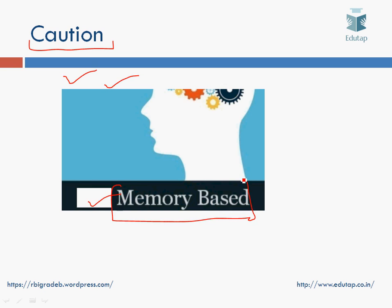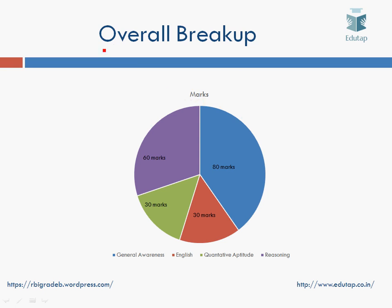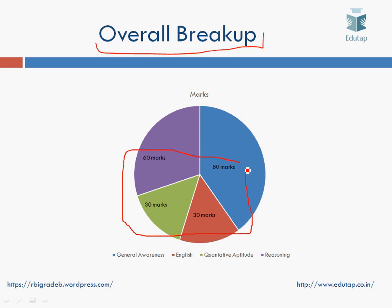This is the overall breakup of the Phase 1 examination. There are a total of 200 questions worth 200 marks. 80 marks is devoted to the general awareness section, 60 marks to the reasoning section, 30 marks to the English section, and 30 marks to the quant plus DI section in Phase 1.